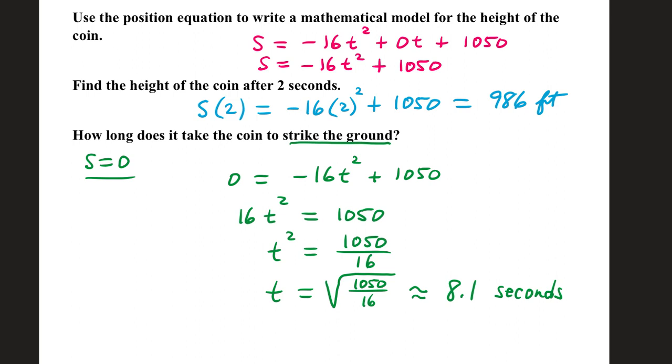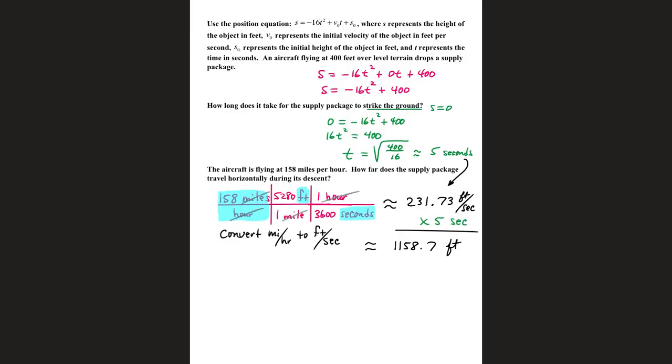How long does it take the coin to strike the ground? When that happens, its height is 0. So we're going to replace S with 0. Let's move this negative term over. 16t squared will equal 1,050. Divide by 16, t is going to be the square root of 1,050 over 16, and that's approximately 8.1 seconds.